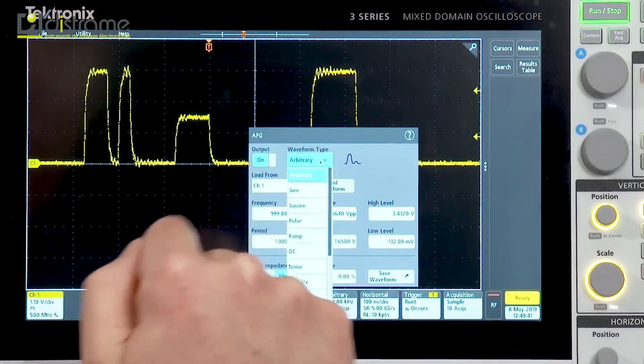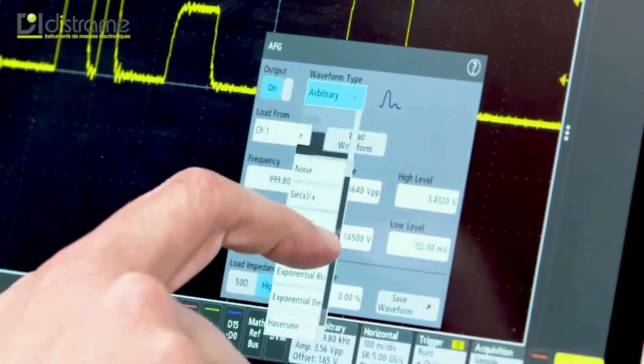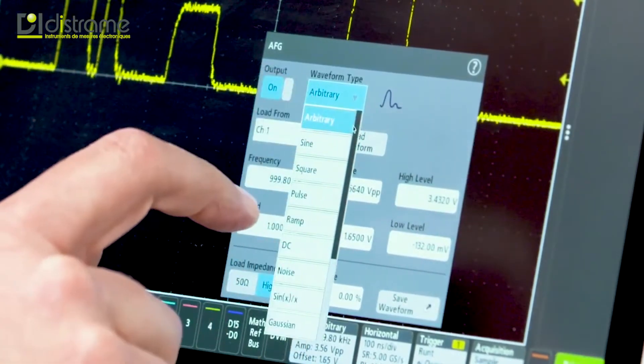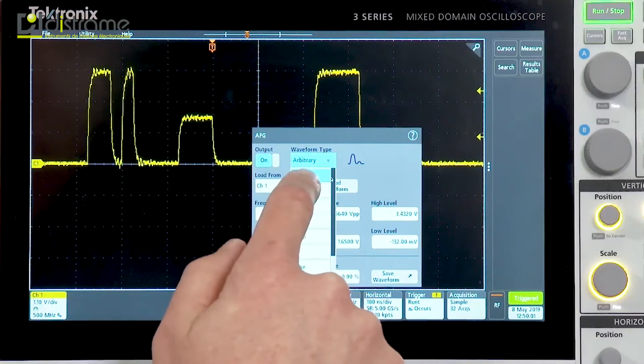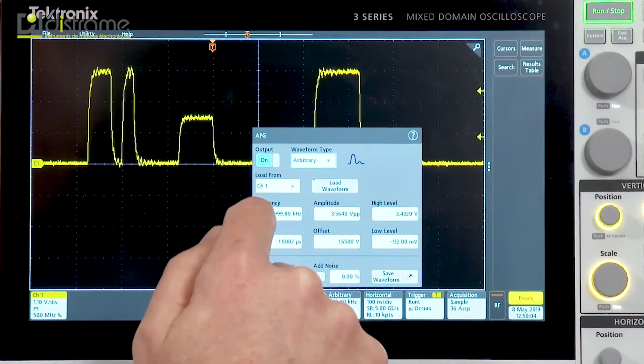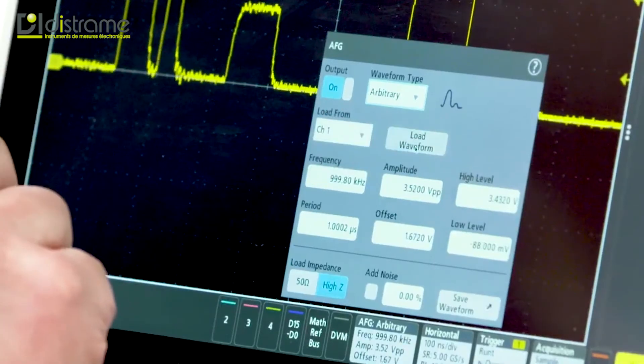As you can see up here under waveform type, there's a wide variety of waveform types we support. On channel 1, I have captured an intermittent runt pulse, so what I'm going to do is select arbitrary waveform type and load waveform from channel 1. Let's go ahead and do that.